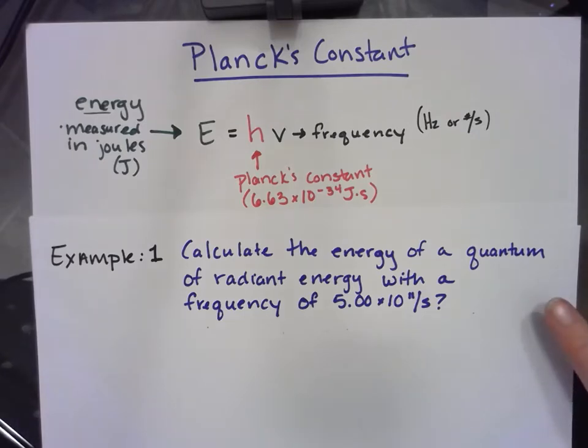And here's the first example. It says calculate the energy of a quantum of radiant energy with a frequency of 5.00 times 10 to the 11 cycles per second.